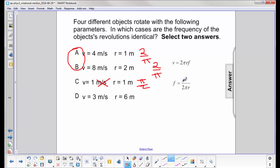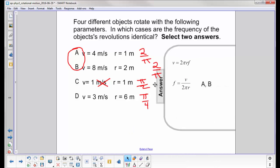And in this case, it would be 3 over 2 times 6 is 12. That's π over 4. That also doesn't work. So the answer is A and B.